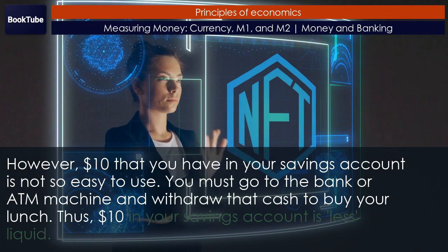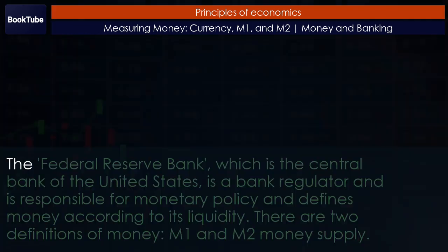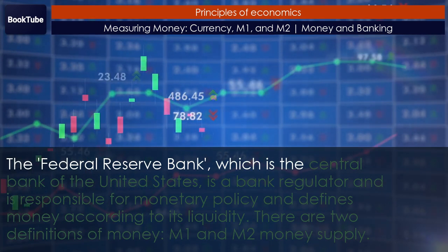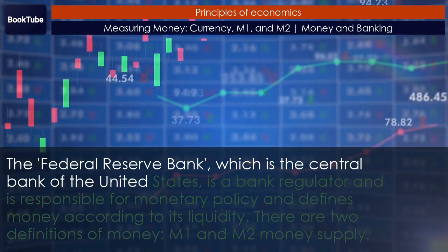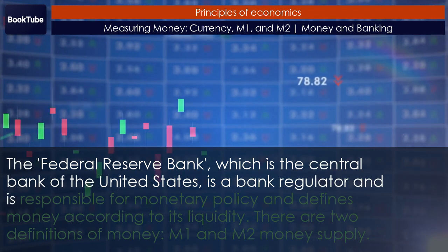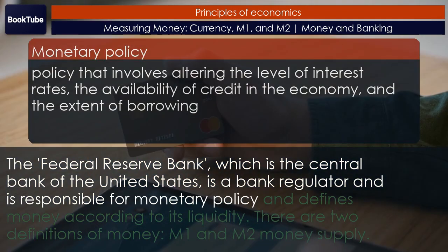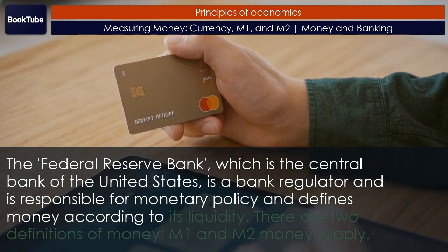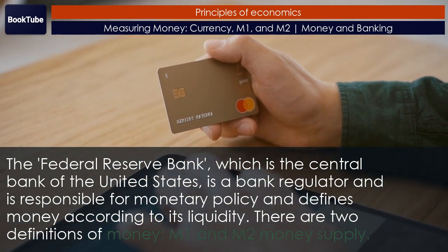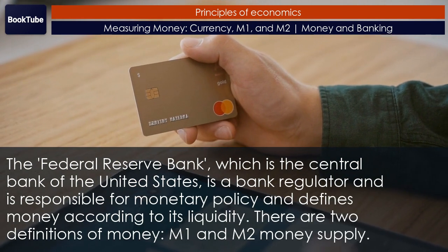Thus, $10 in your savings account is less liquid. The Federal Reserve Bank, which is the central bank of the United States, is a bank regulator responsible for monetary policy, and defines money according to its liquidity. There are two definitions of money: M1 and M2 money supply.